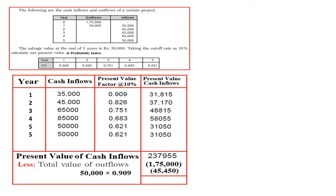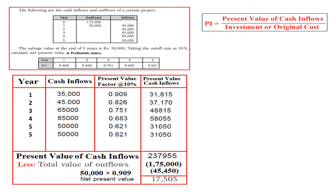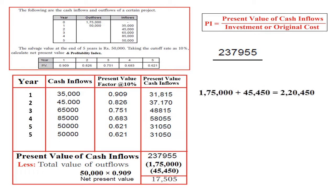When you deduct total investment from the present value of cash inflows, the resultant figure is 17,505 — this is our net present value. For the profitability index: PI equals present value of cash inflows divided by investment. Present value of cash inflows is 2,37,955. Total investment is 1,75,000 plus 45,450 equals 2,20,450. Therefore, PI = 2,37,955 ÷ 2,20,450 = 1.078.